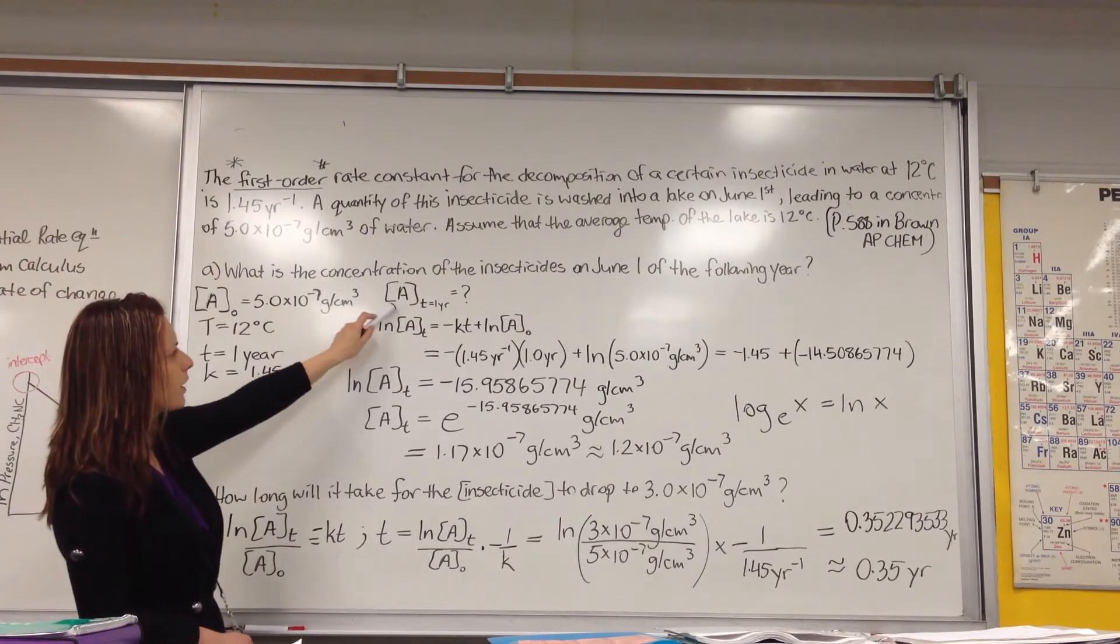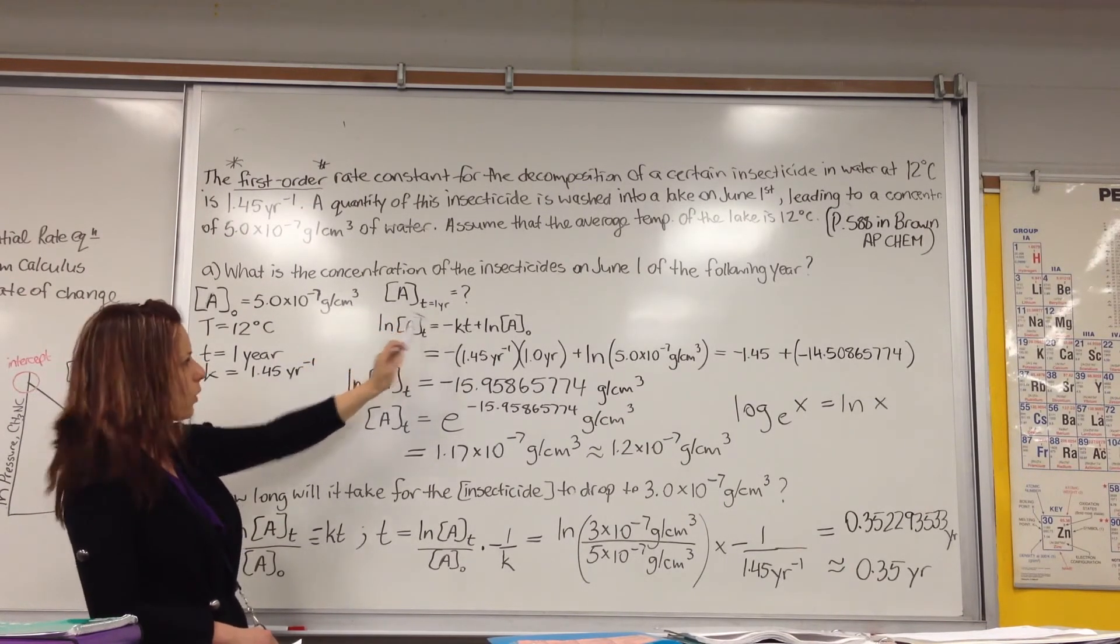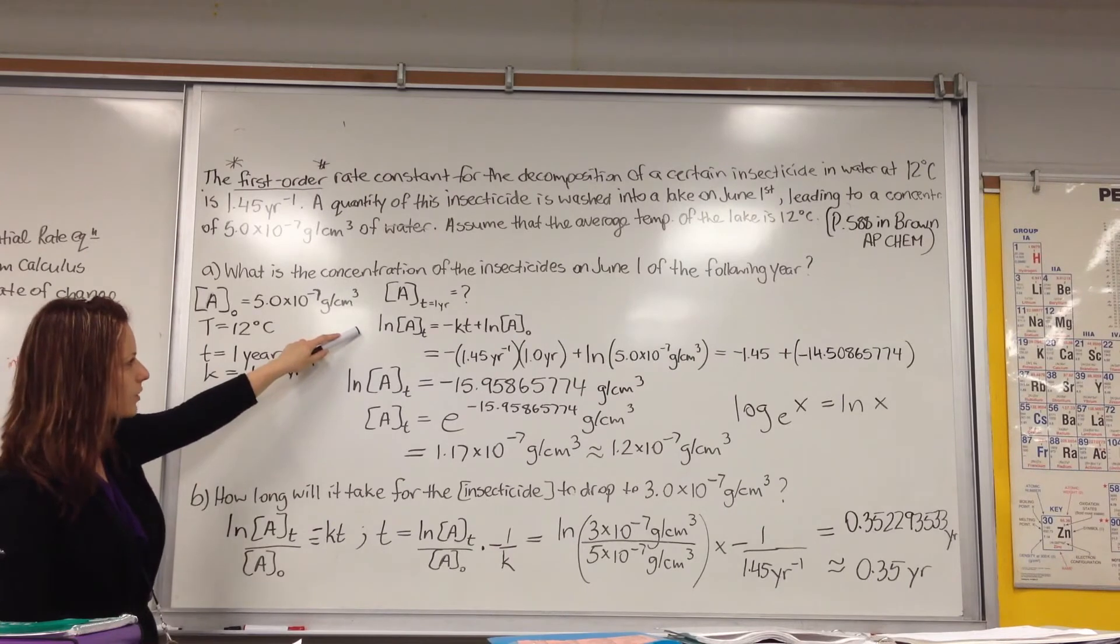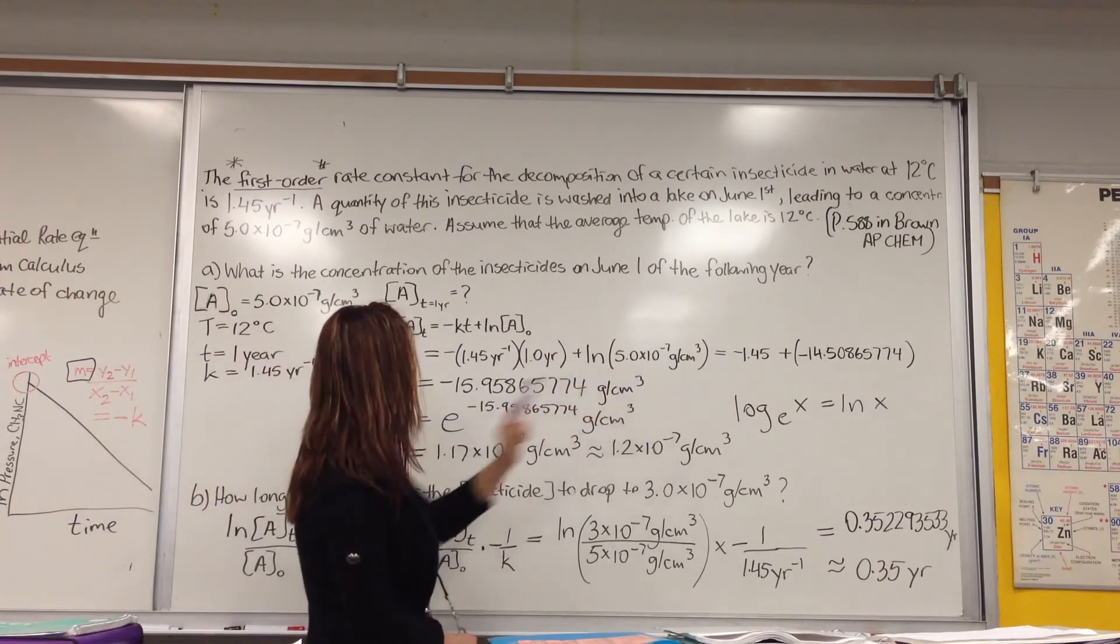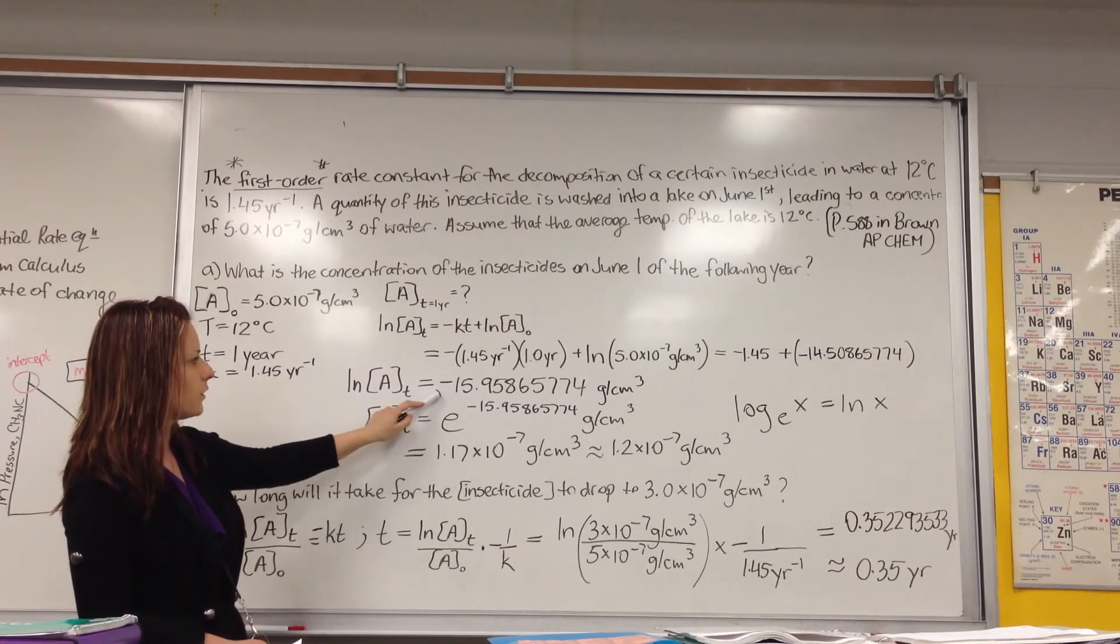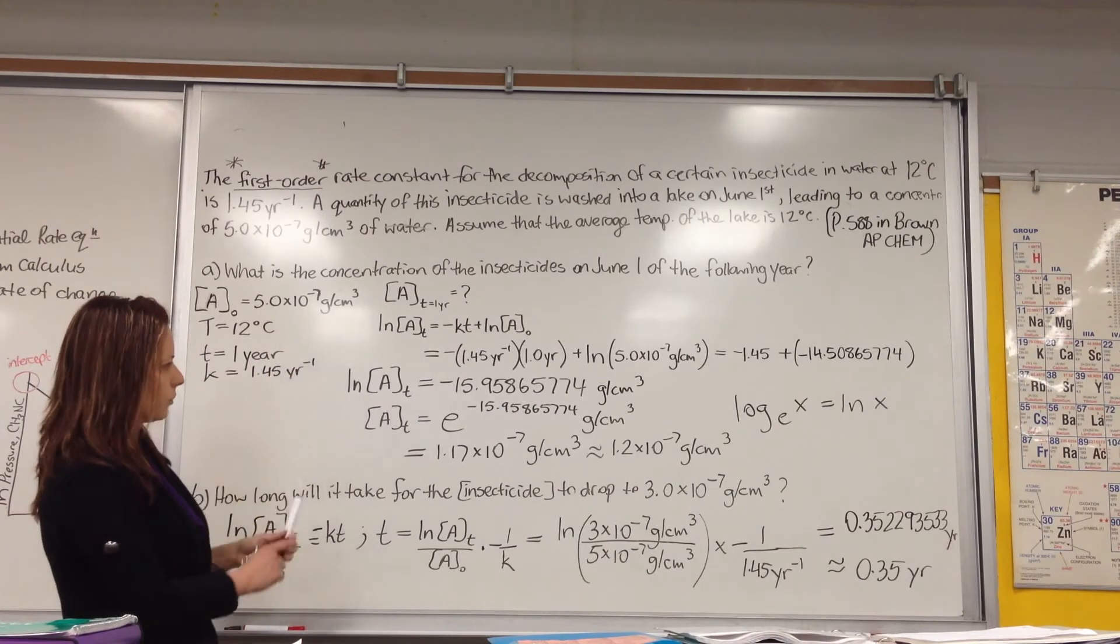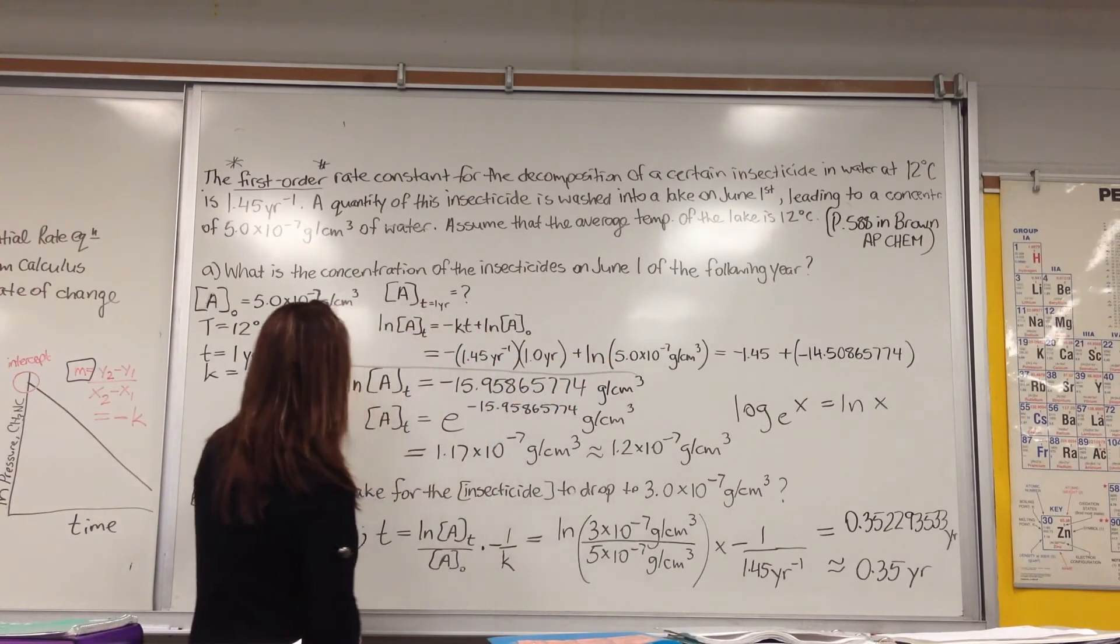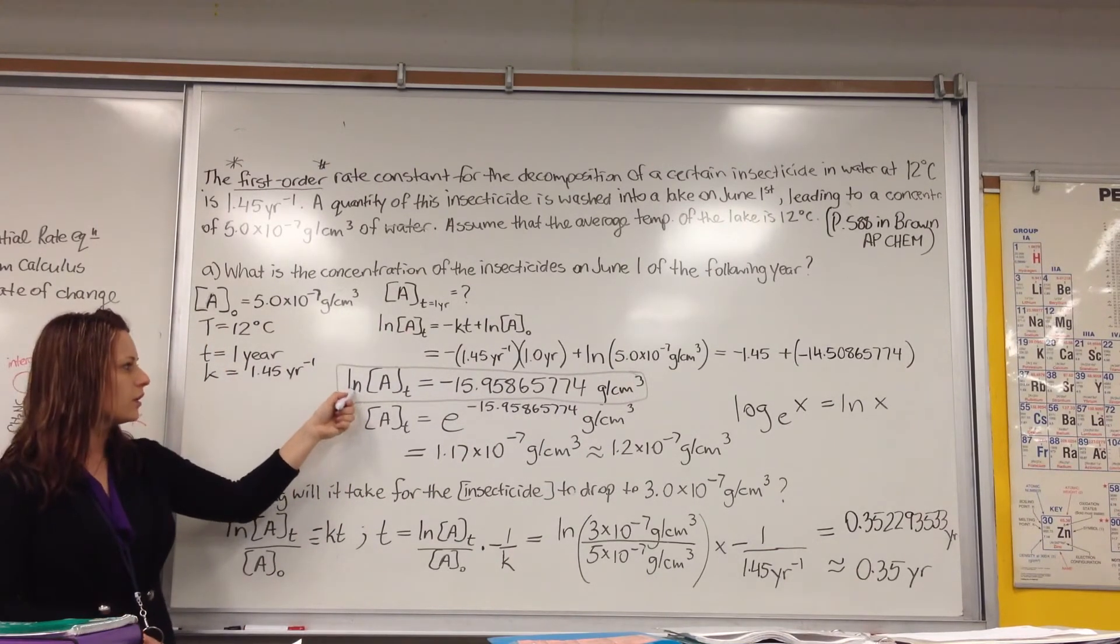And what we're asked to find out is the concentration of A at time equals one year. So we use the integrated first order expression, and we sub in everything that's given to us in the question. And when we work that through, we end up getting the ln of A at time T is equal to negative 15.95865774 grams per centimeter cubed. Now, what's important to remember is that this is the ln expression. This isn't A at time T, so you don't stop here.